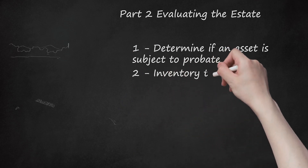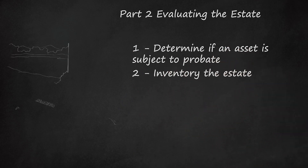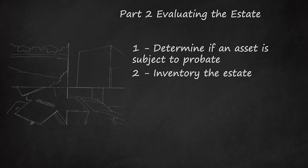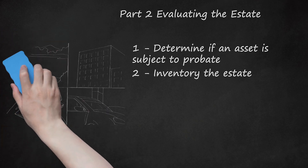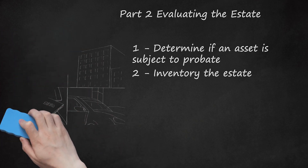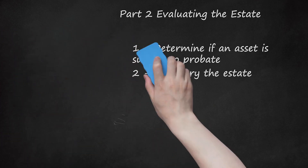Step 2: Inventory the Estate. As PR you are required to identify all of the decedent's assets. You should document the following: all real property, i.e., land and buildings that the decedent owned; personal bank accounts; personal investments including retirement accounts, stocks, or bonds; ownership interests in businesses; and all other items owned solely by the decedent.